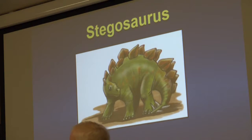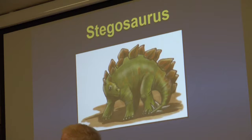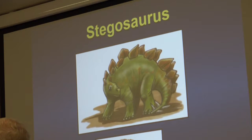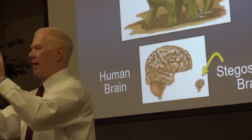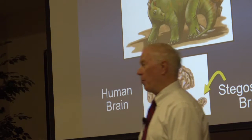If somebody came up to you and said, 'Wow, you must have the brain the size of a stegosaurus brain' — this is a big creature — how many of you would say thank you? The stegosaurus brain was the size of a walnut. Here's a creature God created, way over 5,000 pounds, with a brain the size of a walnut. Here you are at 70, 80, 150 pounds with a much bigger brain. Who do you think God loves a little bit more? Aren't you glad he gave you the brains?